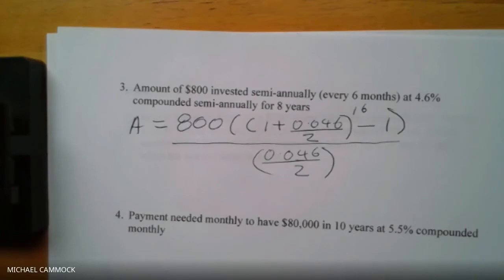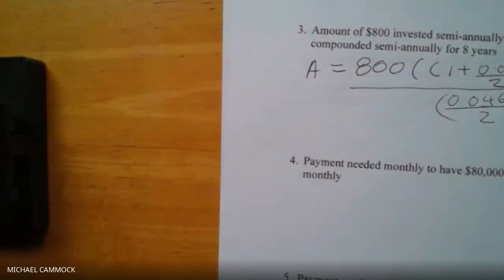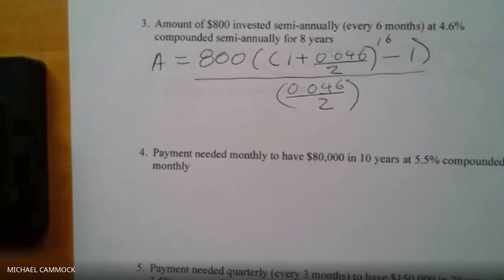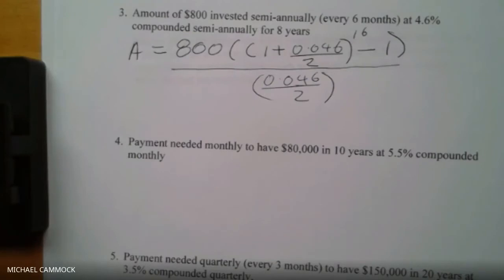Now a different type of question. This time we know the amount we want — $80,000 — and we want to know how much to put into the account every month to reach it. The bank is offering 5.5% compounded monthly for 10 years. This requires the second formula, where we solve for R instead of A.